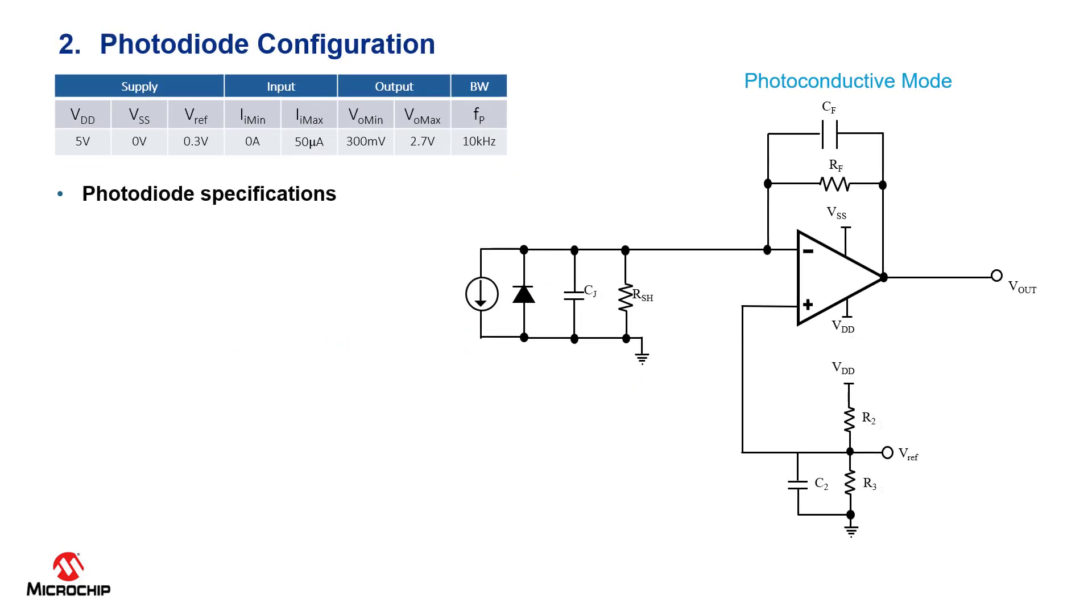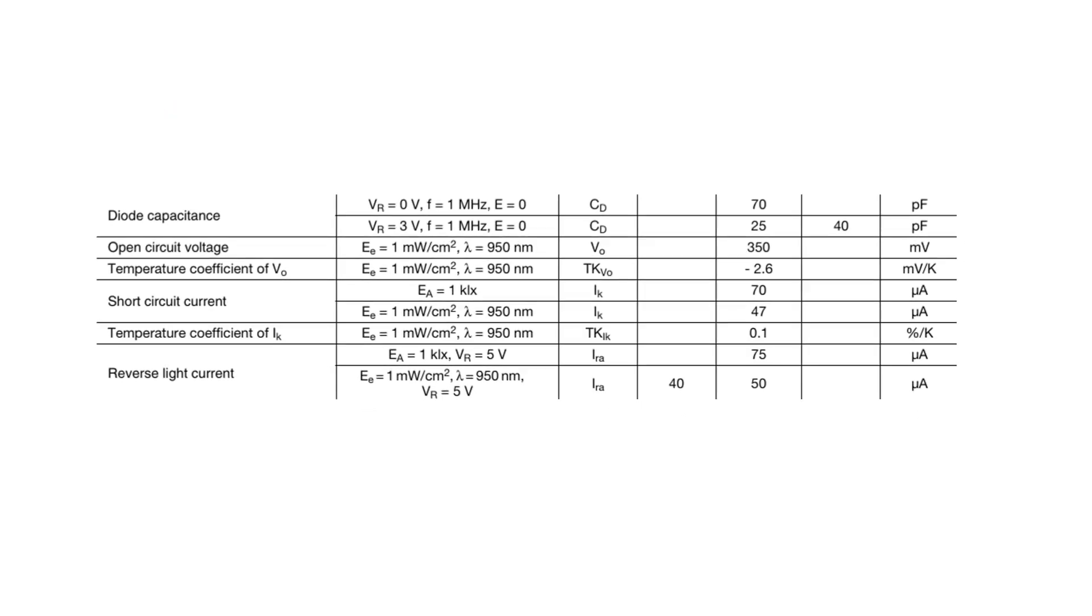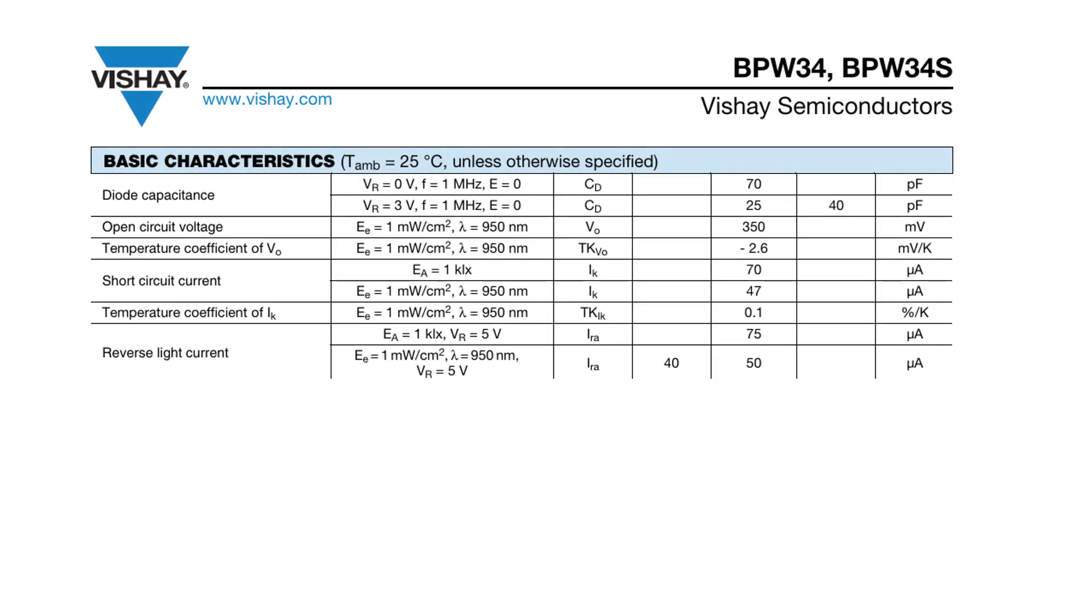For step two, we need to set up the photodiode. First, let's go over the photodiode specifications and there are three key specs that we need to look for. Capacitance, peak current, and shunt resistance. To find these values, we go to the data sheet. For this particular photodiode, I was able to find the values on their basic characteristics.